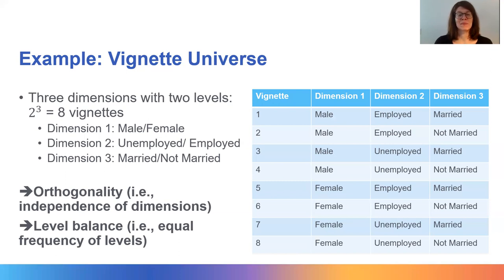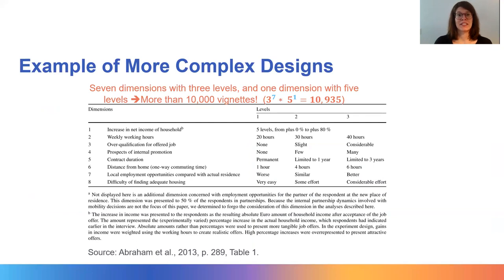The vignette universe is characterized by level balance, which means that the levels of the vignette dimensions occur with equal frequency. Orthogonality and level balance are desirable features. Level balance ensures that the impact of the dimensions on the outcome of interest is estimated with maximum efficiency. Orthogonality and the random assignment of vignettes to respondents is required to be able to interpret the results in a causal way. In many applications, however, the vignette universe can quickly become quite large — as shown in an example from a study on unemployment and the willingness to accept job offers, which had over 10,000 vignettes in the vignette universe.